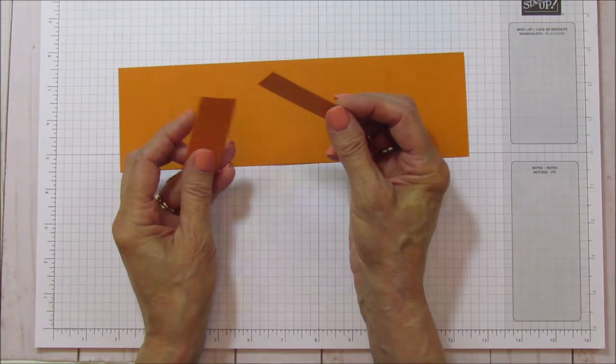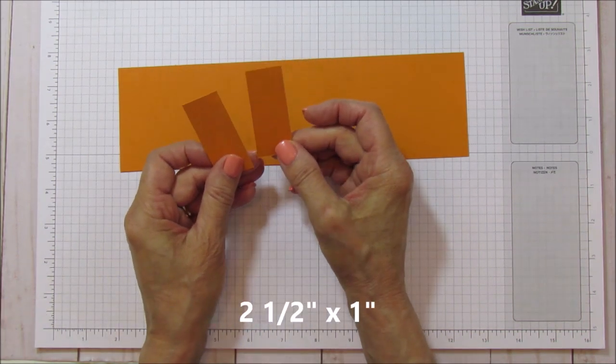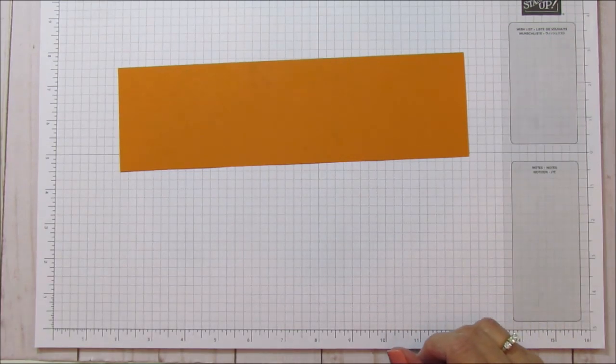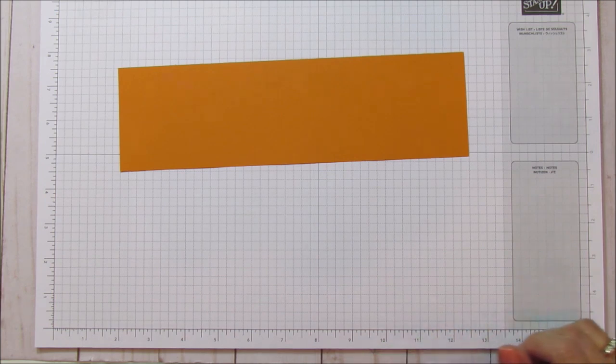Then you are going to need two pieces. These are two and a half by one, and I'll show you what we're going to do with those as soon as we get to that point.